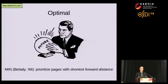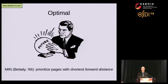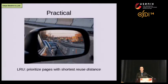In an ideal world, if we knew the future — if we knew what data a workload wanted before it asked for it — we could make the optimal decision at every point. The optimal cache replacement policy was first described in 1966. The idea is to prioritize pages with the shortest forward distance, so pages that will be needed soonest in the future get put in fast memory. Of course, we don't know the future, so as systems engineers, we assume that the future is going to mirror the past.